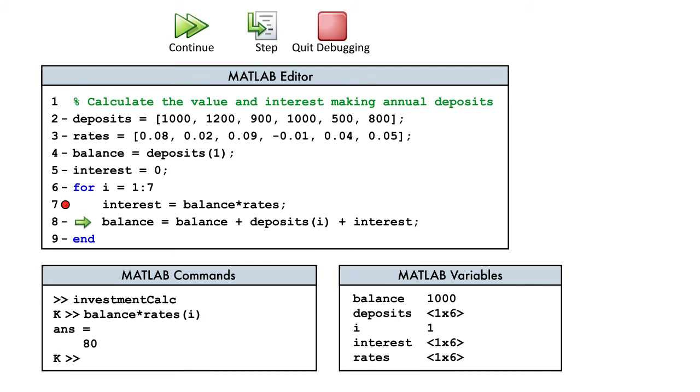In debug mode, we can type commands to test possible corrections. Here, what we meant to do was use the loop variable i to select a value from the vector rates.